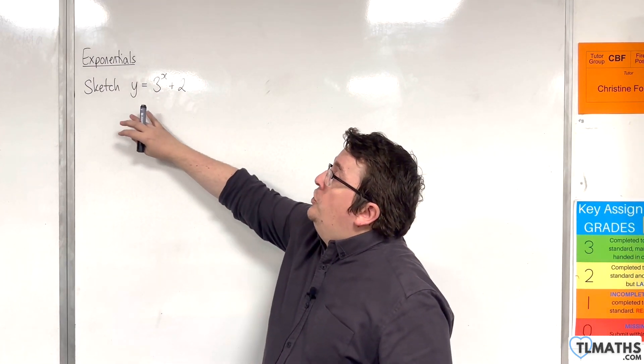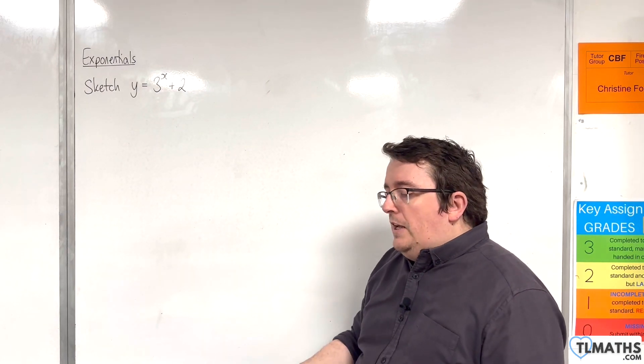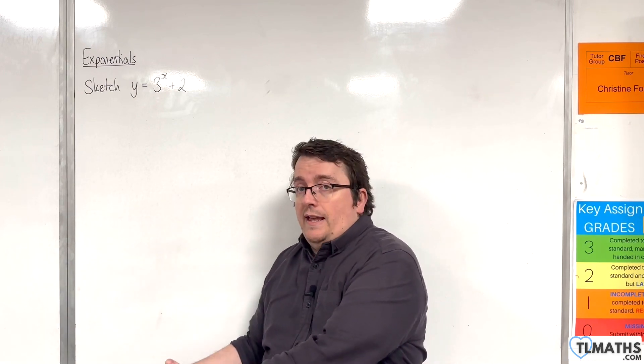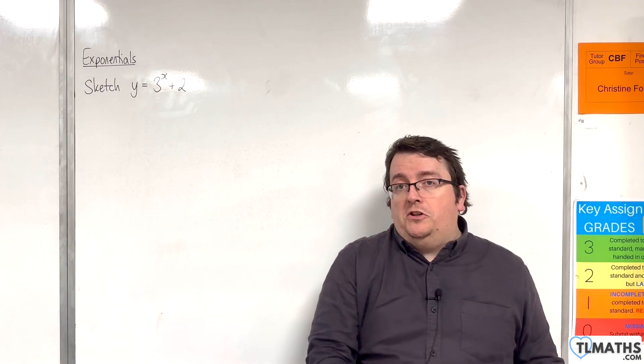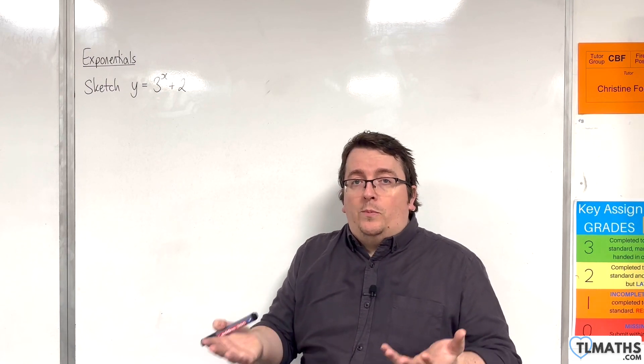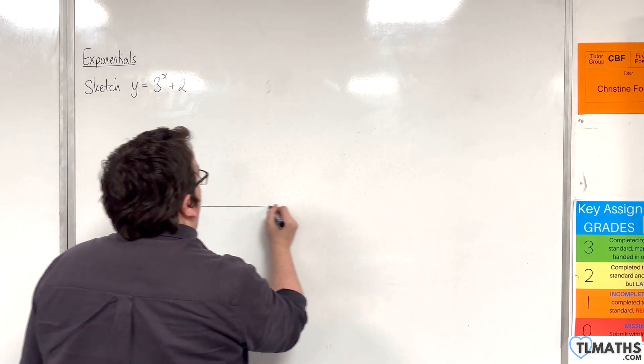So we're going to look at sketching y equals 3 to the x plus 2. Now what you need to think about is that in going from y equals 3 to the x to y equals 3 to the x plus 2, a vertical translation of 2 units has occurred. We're adding 2 to all the y values, so it's going to bring the graph up by 2 units.